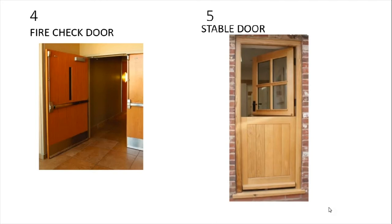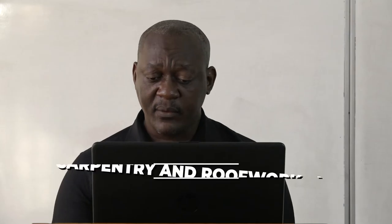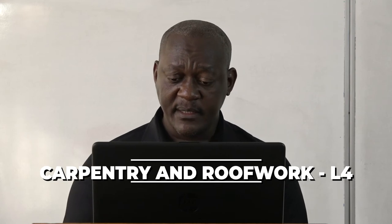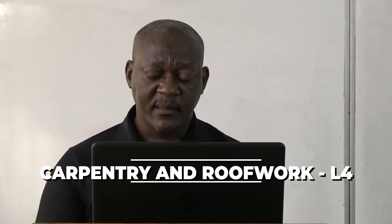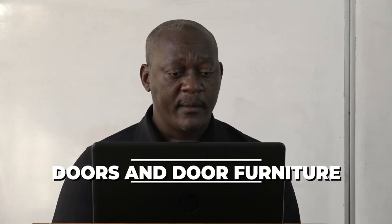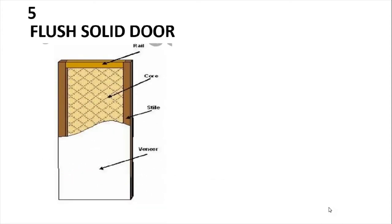A stable door — it opens halfway. You can close the lower part in the kitchen but leave the top part open to allow ventilation or heat to escape. It is traditionally used on horse stables. The fifth type is a flush solid door — it has a framework and a solid material in between, and a veneer on the surface. The core is normally gypsum material or solid wood laminated together, and there is a style with a lock block as well.